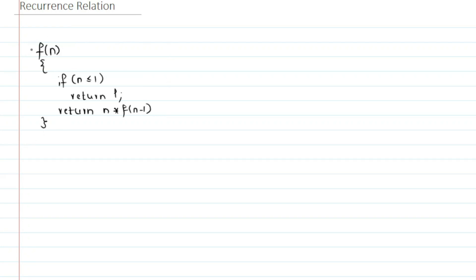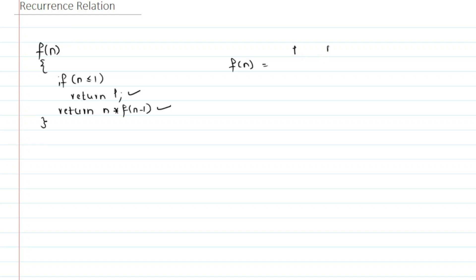If you didn't get what this code is, I suggest you please watch the recursion video. Now, this code is returning two values: either 1, or n into f of n minus 1. So we can see that f of n returns either 1 if n is less than or equals to 1, or n into f of n minus 1 otherwise. So this is the recurrence relation for the value.